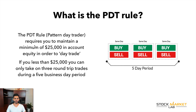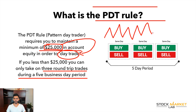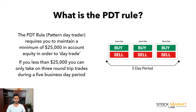The Pattern Day Trader rule requires you to maintain a minimum of twenty-five thousand dollars in account equity in order to day trade. So you need over twenty-five thousand dollars if you want to become a full-time day trader. If you have less than twenty-five thousand dollars, you can only take on three round-trip trades during a five business day period.